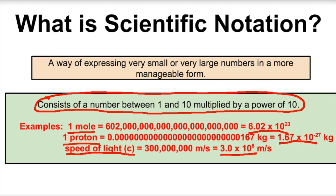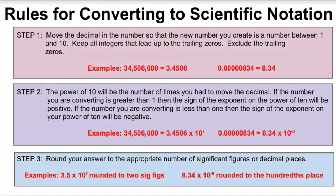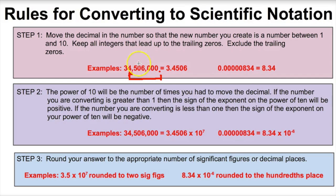Now let's look at the rules for converting numbers to scientific notation. Step one: move the decimal so that the new number you create is between 1 and 10. For example, with 34,506,000 we move the imaginary decimal between the 3 and the 4 to get 3.4506. Keep all nonzero integers and captive zeros; you can drop the trailing zeros.